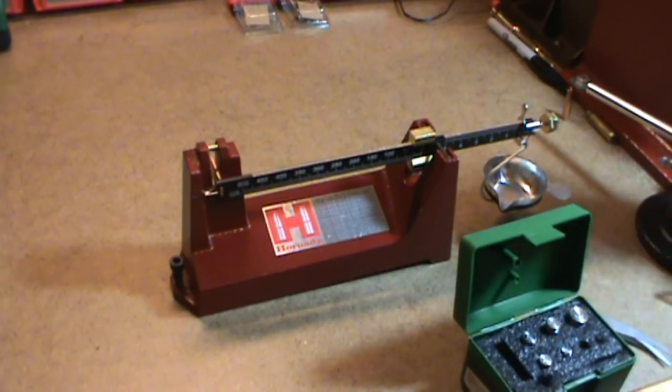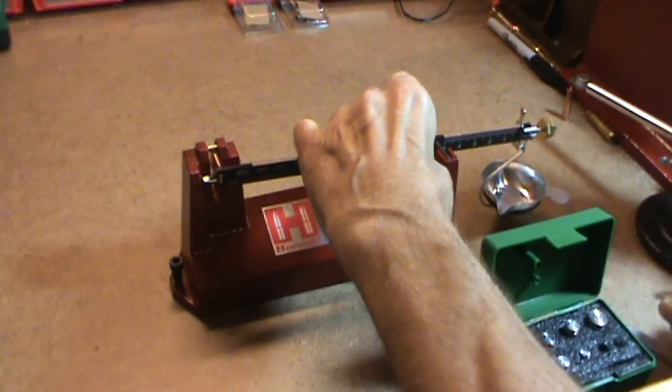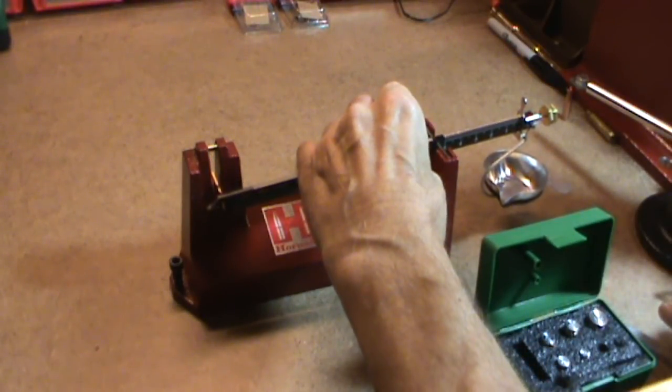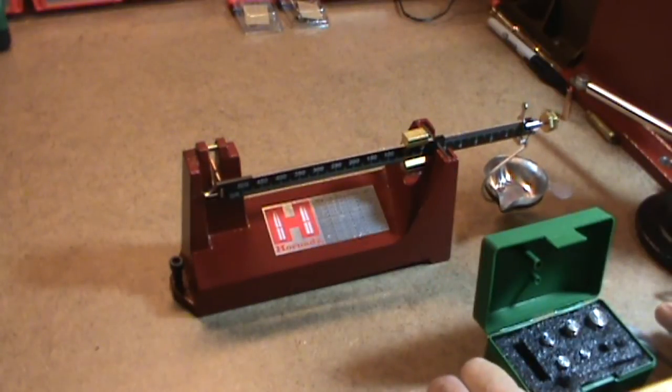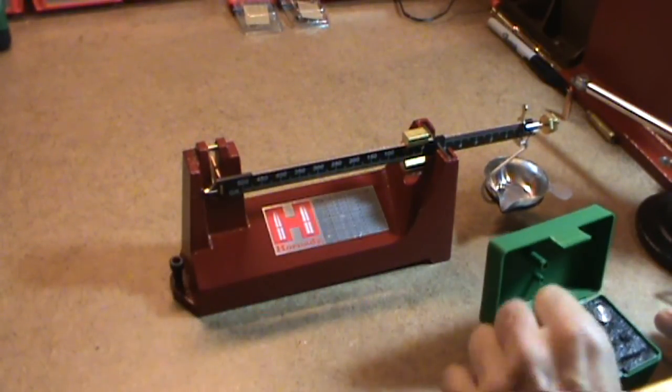We can test a little more here. I'll put a 20 grain check weight in the powder tub. Set it to 20 grains. And sure enough, it comes back to center.